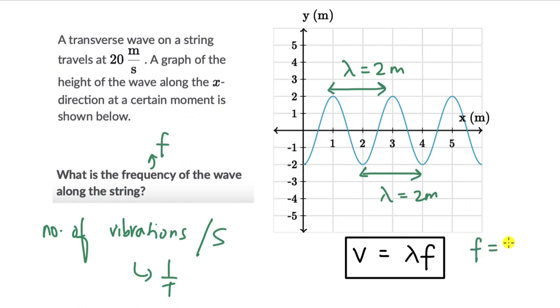Frequency then is v divided by lambda. And in this case, it will be 20 divided by 2. So this comes out to be equal to 10, 10 hertz. Okay, let's look at one more question.